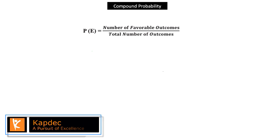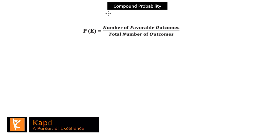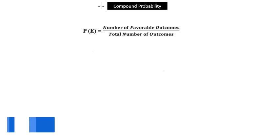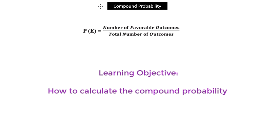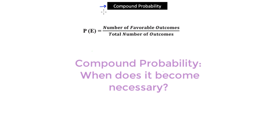We learned about single event probability and how to calculate the probability of a desired outcome. In this tutorial, we are going to focus on how to calculate compound probability. Compound probability comes into action when you have more than one event happening, either at the same time or in a sequential manner.